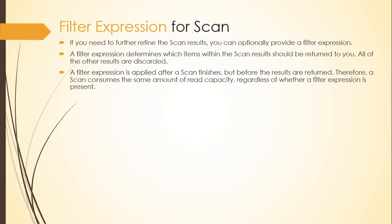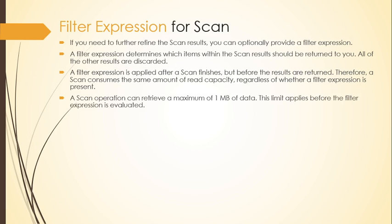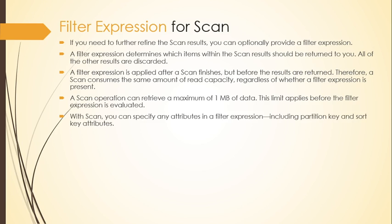A filter expression is applied after a scan finishes but before the results are returned. DynamoDB first scans your table, and when the scan operation is complete it applies the filter expression, returning only items that match your condition. Therefore a scan consumes the same amount of read capacity regardless of whether a filter expression is present. A scan operation can retrieve a maximum of 1 MB of data, and this limit applies before the filter expression is evaluated. You can specify any attributes in a filter expression, including partition key and sort key attributes.